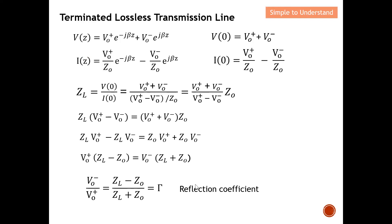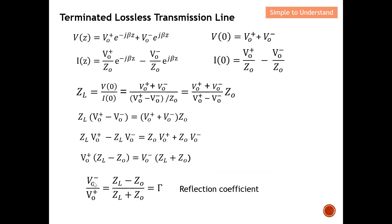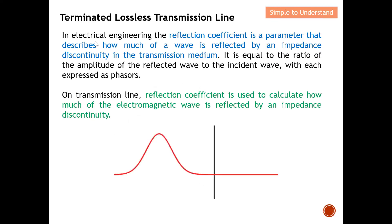In electrical engineering, the reflection coefficient is a parameter that describes how much of a wave is reflected by an impedance discontinuity in the transmission medium. The reflected wave amplitude divided by the incident wave amplitude gives the reflection coefficient. It equals the ratio of the amplitude of the reflected wave to the incident wave, each expressed as a spatial phasor.